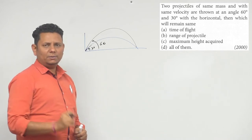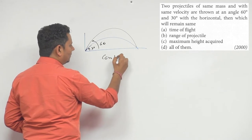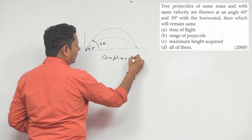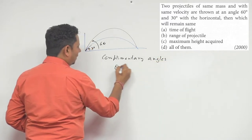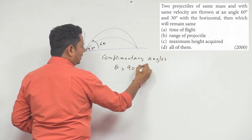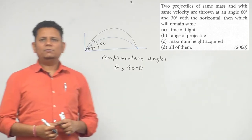Since 30 and 60 degrees are complementary angles - theta and 90 minus theta - if these two angles are complementary, the range will remain the same. So option number B would be the correct answer.